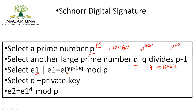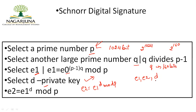Next, you select d, which is the private key. Once you have e1 and d, you calculate e2 as e2 = e1^d mod p. So you end up with three keys: e1, e2, and d, where d is the private key.